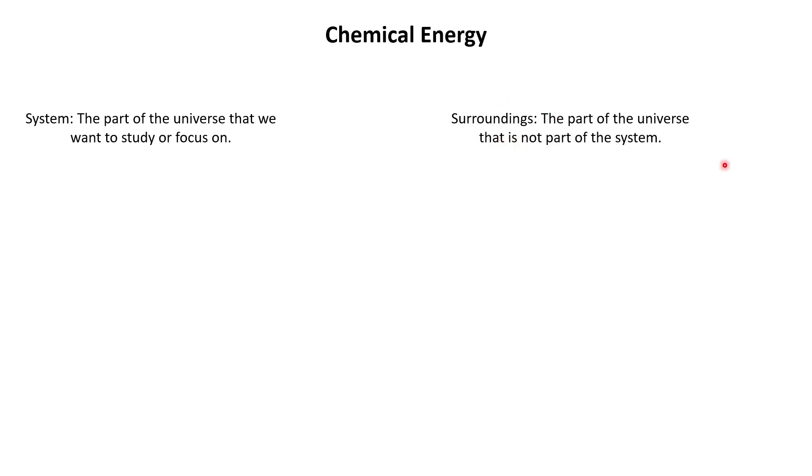The surroundings is everything else. It's anything that is not part of the system. So again, if we are studying a reaction in a beaker, our surroundings would be maybe the classroom that you're studying that in. It's basically anything else that is not the system.